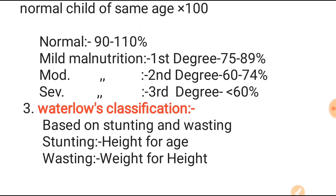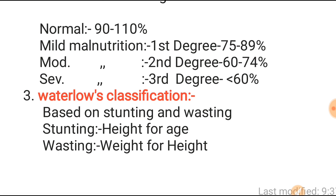The next is the Wellcome classification, which is based on stunting and wasting. Stunting is height for age, and wasting is weight for height. Height is common in both terms, which can be confusing.